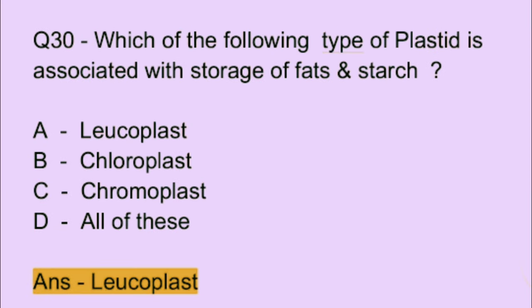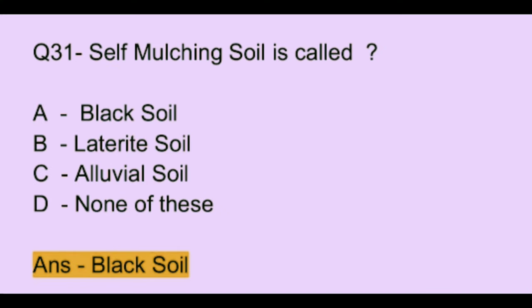Question number 30. Which of the following types of plastid is associated with storage of fats and starch? Option A: leucoplast. Option B: chloroplast. Option C: chromoplast. Option D: all of the above. The correct answer is option A, which is leucoplast.